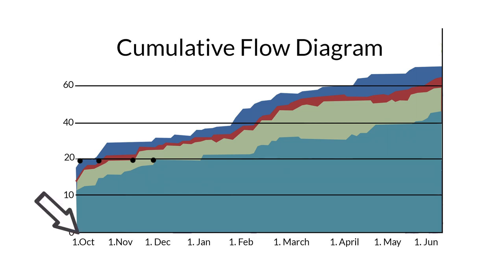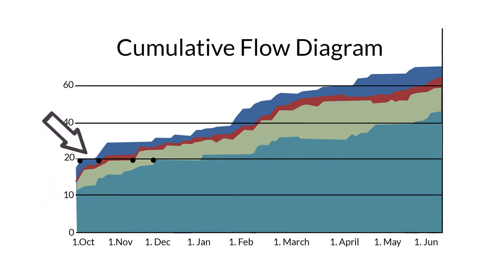If we look at October, we can see in the blue area that 20 customer requests were made, and we can also see that these requests were completed and delivered by the beginning of December in the turquoise area. This lets us know that our cycle time is about two months.